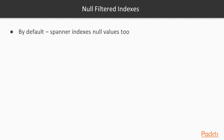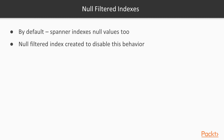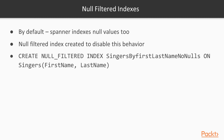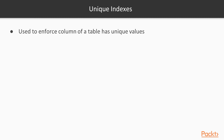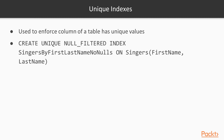By default, Spanner will index rows using null indexed column values, and null is considered to be the smallest possible value, so these values will appear at the start of the index. It is also possible to disable this behavior by using the CREATE NULL FILTERED INDEX syntax, which creates an index ignoring rows with null indexed column values. This index will be smaller and faster to query than a full table scan. You can use a unique index to enforce that a column has unique values; this constraint is applied at transaction commit time and at index creation. Any transaction that would cause multiple index entries for the same key will fail to commit. If a table contains non-unique data, attempting to create a unique index on it will fail.